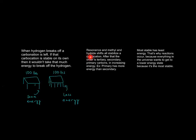So resonance and methyl hydride shifts, they all stabilize the carbocation. So then the order is tertiary, secondary, and primary. And the final thing is the most stable has the least energy, because this is really stable, so therefore it has the least amount of energy when you break it off.